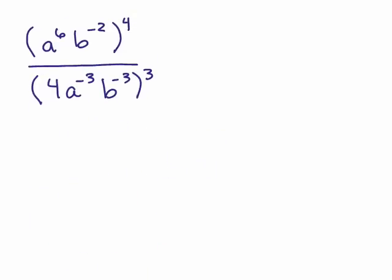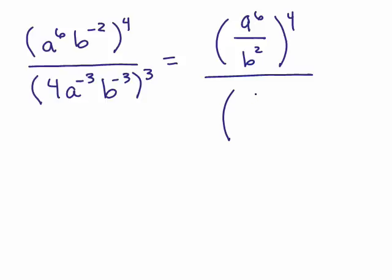Okay. Here's the same problem. But you could have solved it differently by dealing with all the negative exponents inside first. The only thing is you're going to get kind of a big fraction here. So I could write that as a to the 6th over b squared to the 4th power. And then I could write 4 over a cubed, b cubed to the 3rd power. Now remember, the 4 is to the 1st power. So that does not get in the denominator. So you do have a complex fraction when you write it this way. So that's a disadvantage of starting off the problem this way.